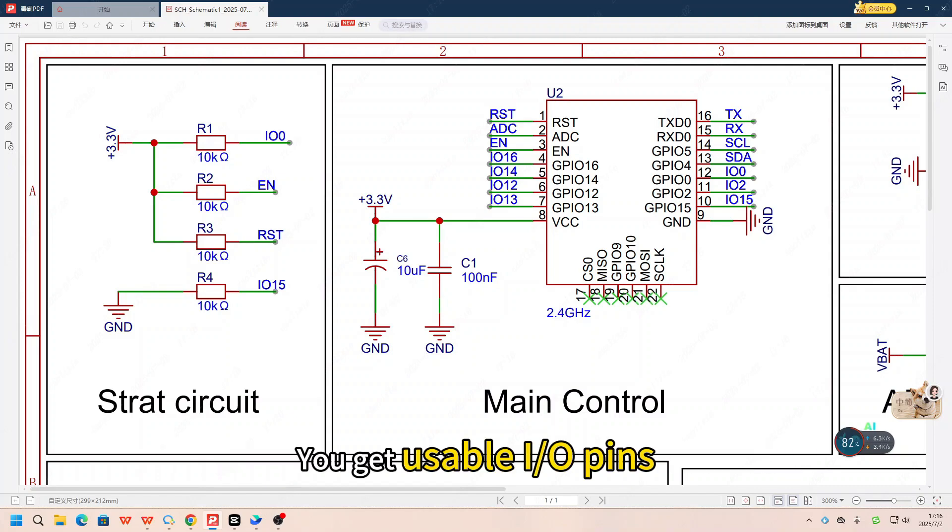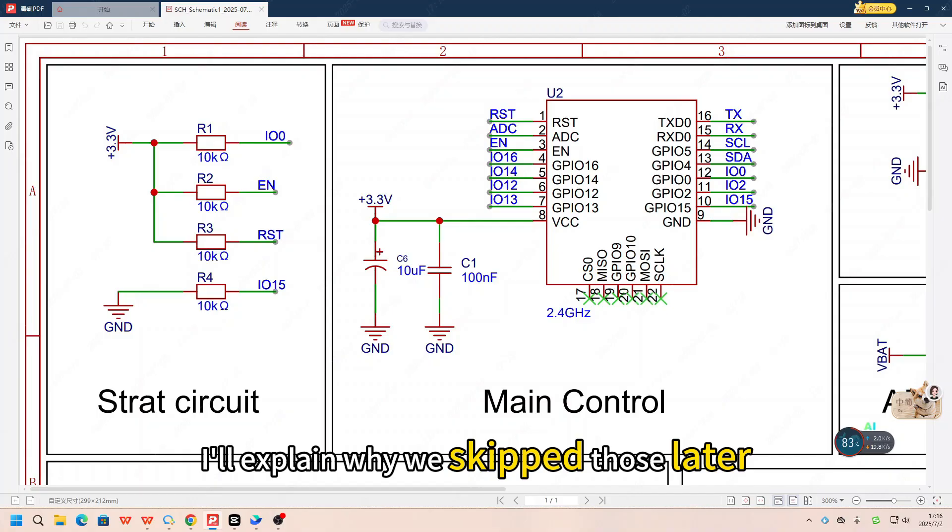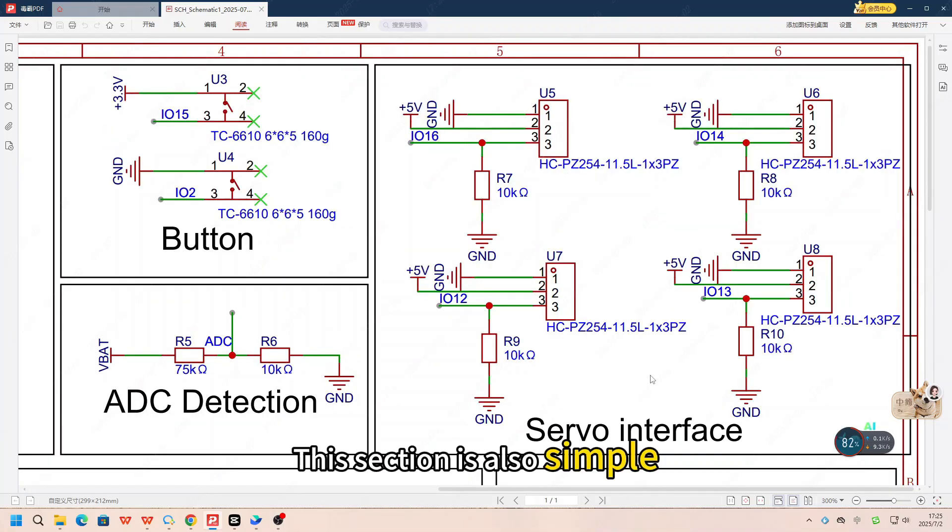You get usable IO pins, power and ground, pretty easy to work with. One of the pins isn't connected, and it's marked NC, not connected. I'll explain why we skipped those later. This section is also simple.